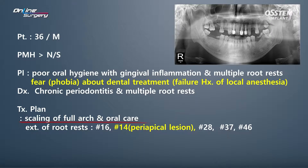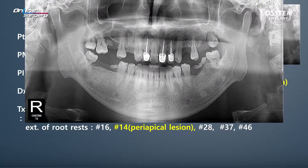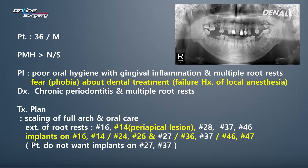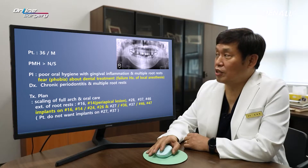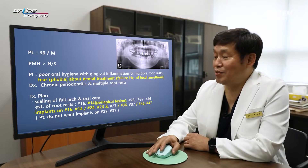The treatment plan: first, overall scaling and oral care was to be done. Root rests in No. 16, 14, 28, 37, and 46 needed to be removed. In the case of No. 14, there is a periapical lesion and I suspect significant alveolar bone destruction. Implants were planned for No. 14, 16, 24, and 26. I originally planned No. 27 as well, but due to economic conditions and fear of dental treatment, the patient didn't want implants in No. 27 and 37.